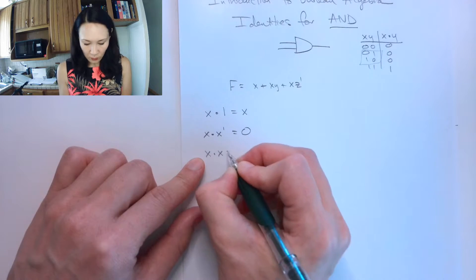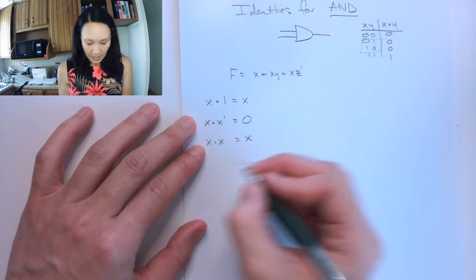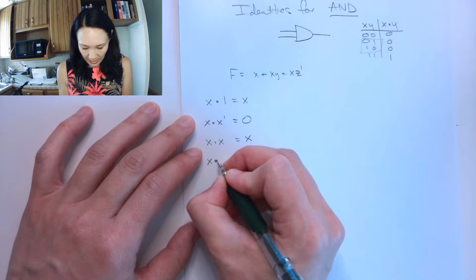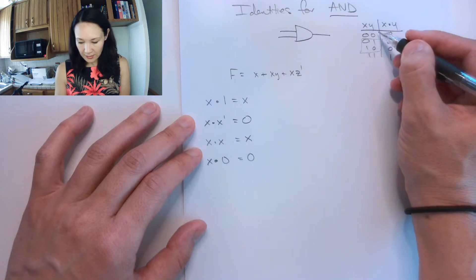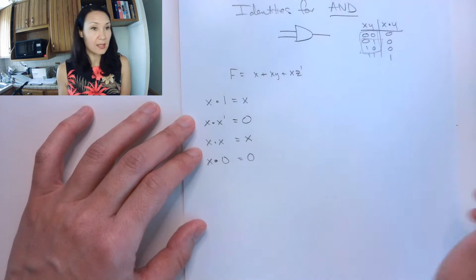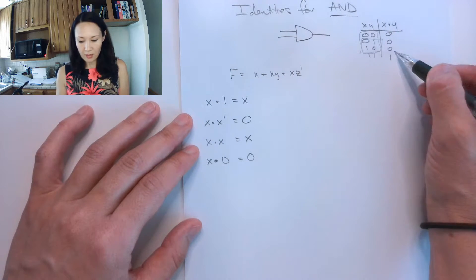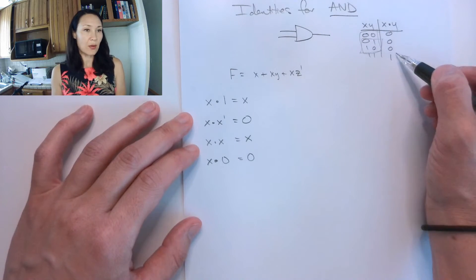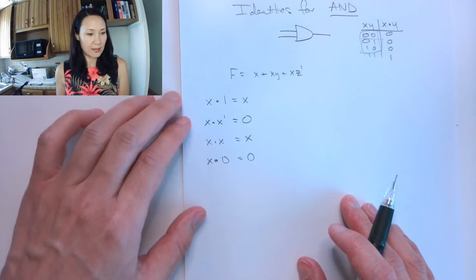If we take x and AND it with itself, we just get x. And if we take x and AND it with 0, we always get 0, because then we'll have one of these cases here. If one of the elements is 0, the result of ANDing will always be 0. It doesn't matter what comes in on x, whether it's 0 or 1.